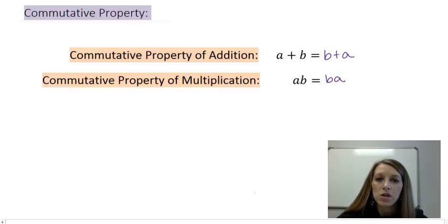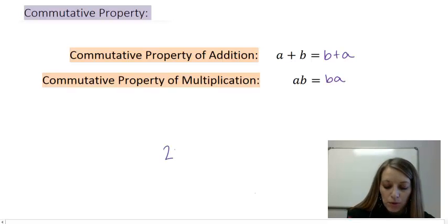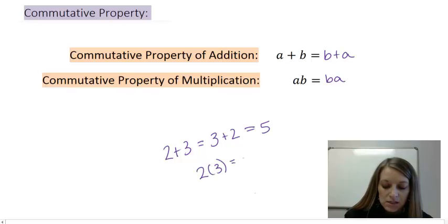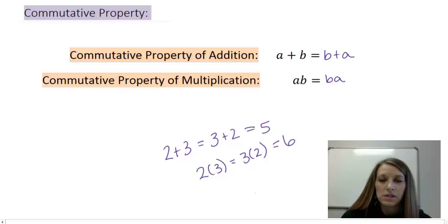So we can rearrange the order of addition and rearrange the order of multiplication and it not change anything. For example, 2 plus 3 is the exact same thing as 3 plus 2. They're both going to give you 5. And 2 times 3 is the exact same thing as 3 times 2. That will give you 6.